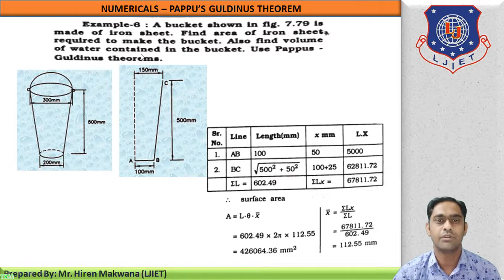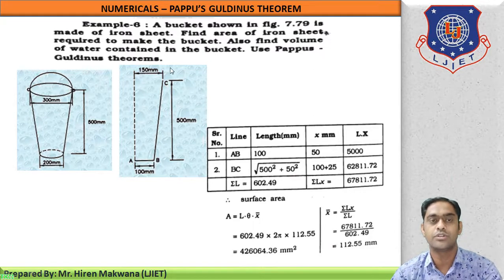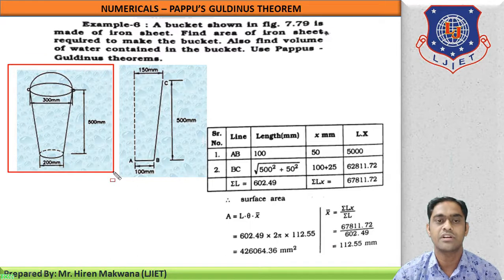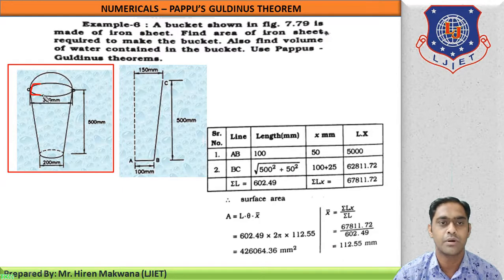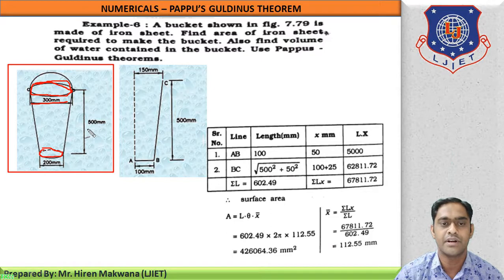Let us see the numerical given here. Example number 6: a bucket shown in the figure is made of iron sheet. Find the area of iron sheet required to make the bucket, and also find the volume of water contained in the bucket. This bucket has an open top diameter of 300 mm, a lower diameter of 200 mm, and a height of 500 mm. The handle is for decorative purpose only.